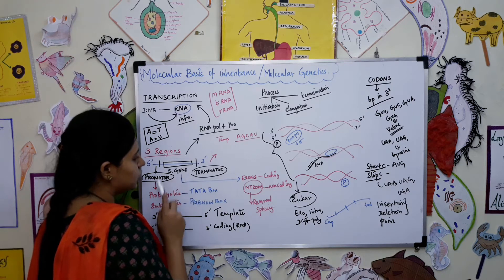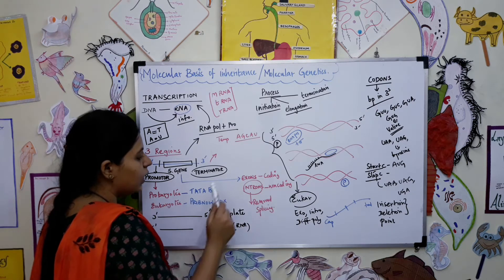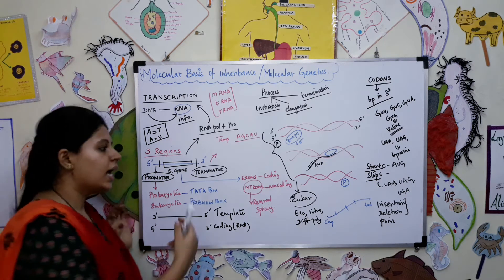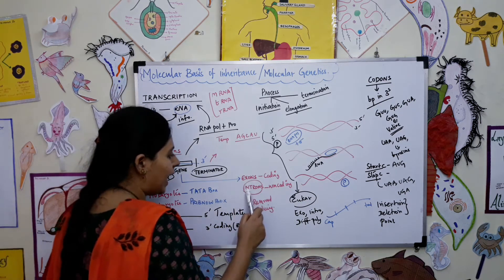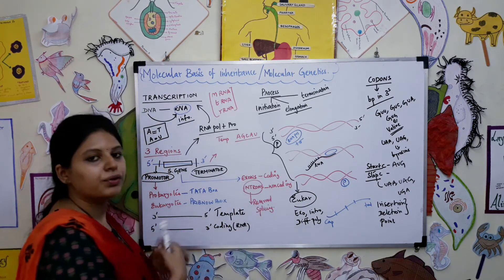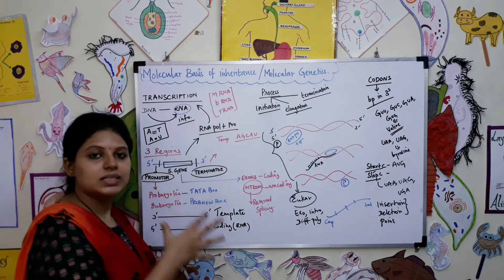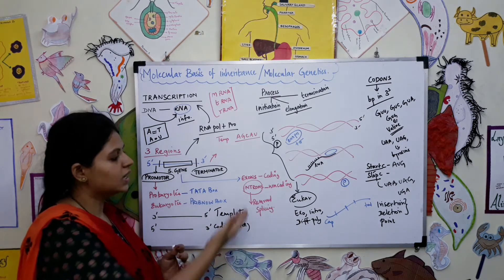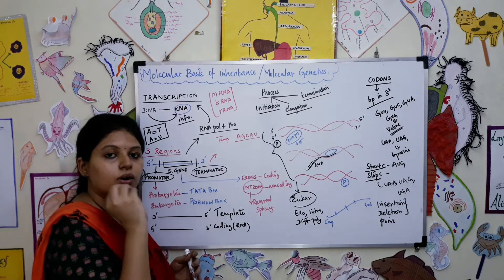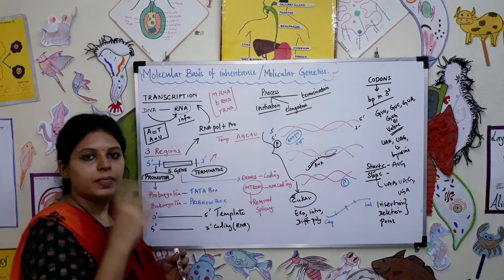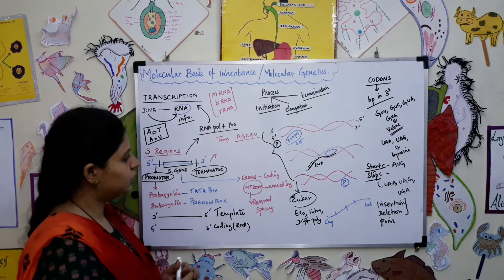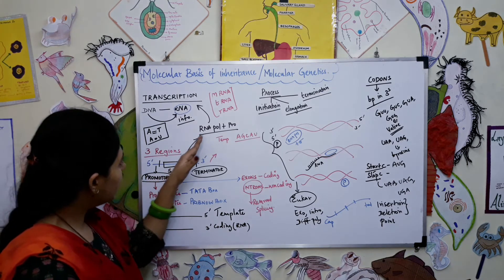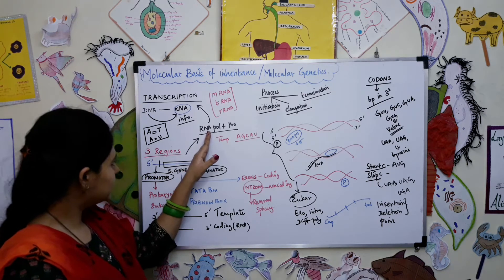The structural genes will have only exons in the case of prokaryotes, but in eukaryotes they have both exons and introns. Exons are the coding, functional genes, while introns are the non-coding genes.